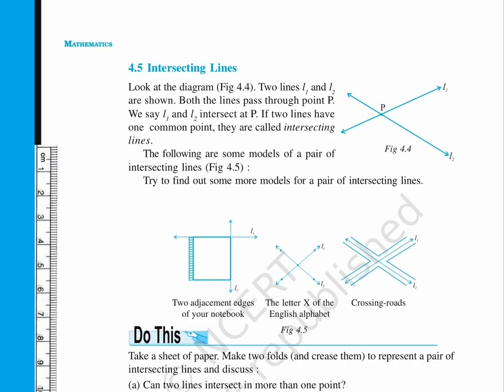The following are some models of a pair of intersecting lines. Figure 4.5. We see two adjacent edges of your notebook. We also see the letter X of the English alphabet and there are the crossing roads. Try to find out some more models for a pair of intersecting lines.